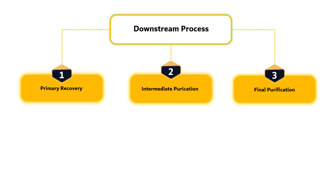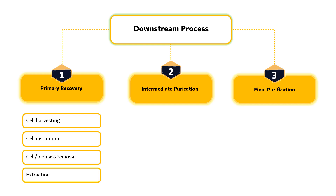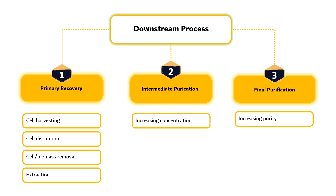The bioproduct recovery process, or so-called downstream process, is required for recovering the final products, which can be divided into three stages. Primary recovery includes cell harvesting, cell disruption, cell debris or biomass removal, and extraction. Intermediate purification involves separation methods to increase concentration, whereas the final purification stage includes methods to increase purity and solvent removal or dehydration.